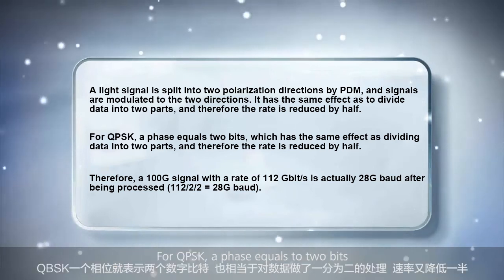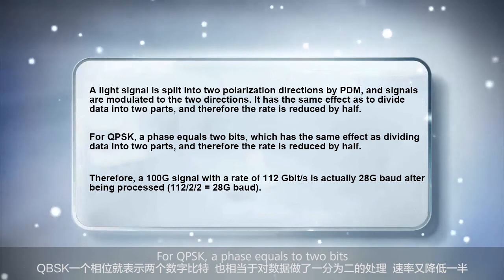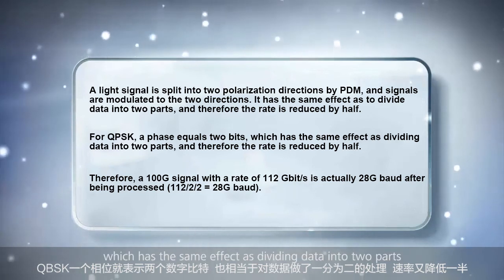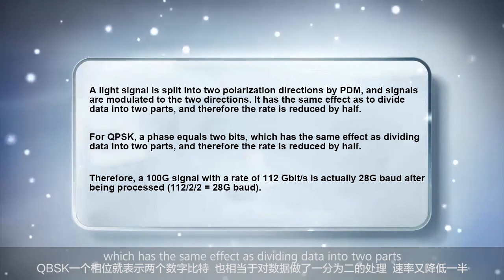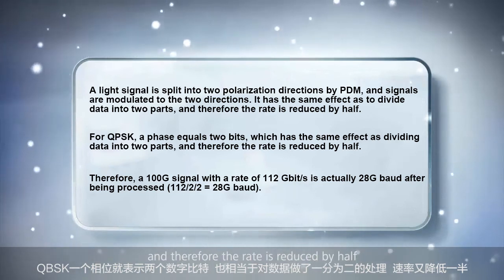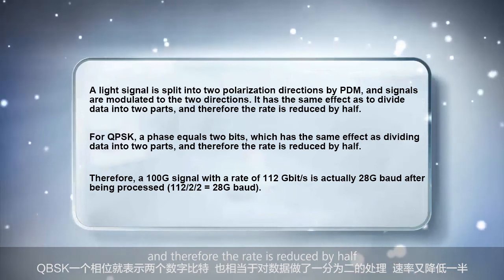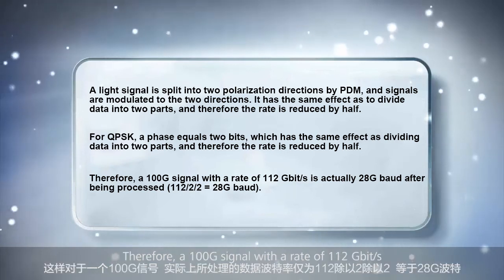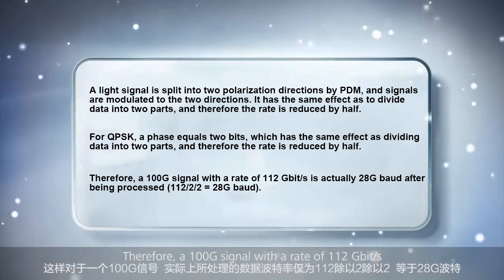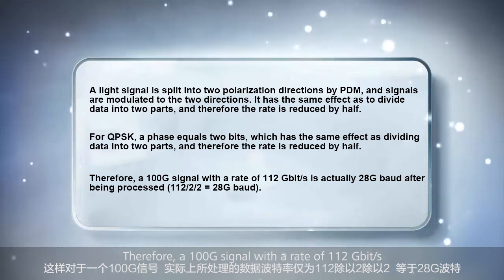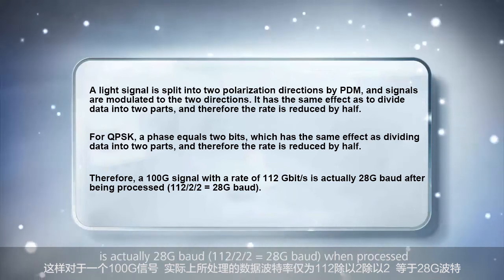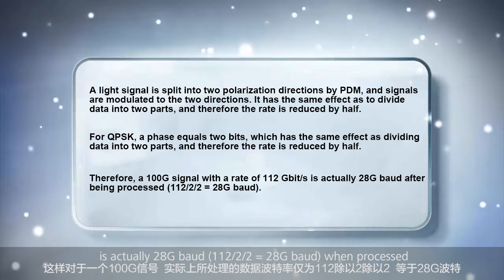For QPSK, one phase equals two bits, which also has the same effect as dividing data into two parts, reducing the rate by half. Therefore, a 100G signal with a rate of 112 gigabits per second is actually processed at only 28G baud.